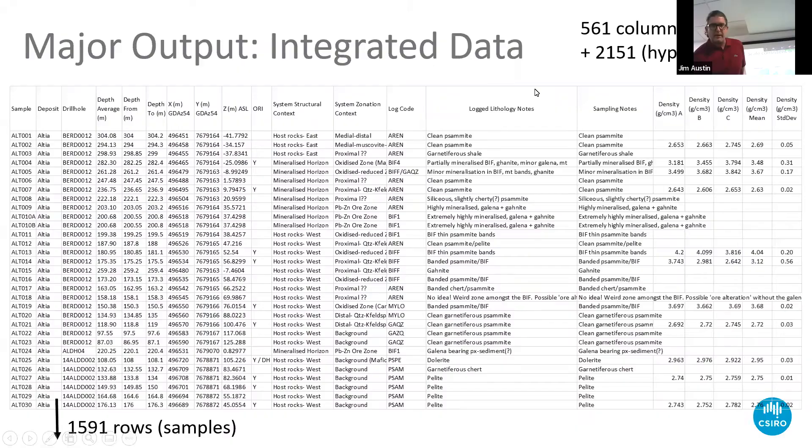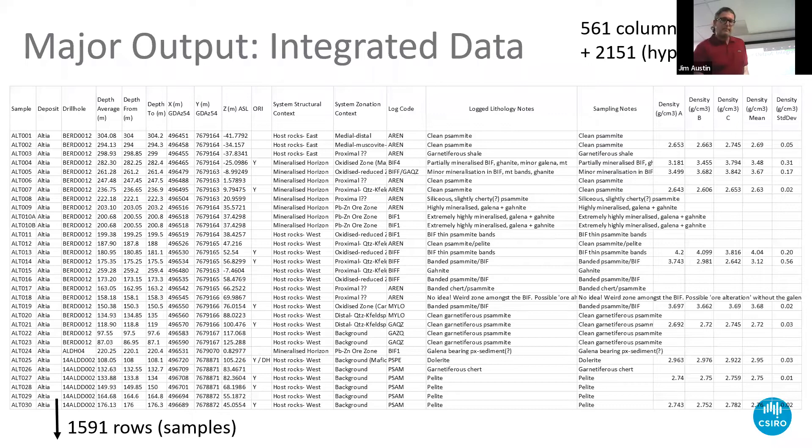There's a lot of information in there — almost 600 columns and almost 1,600 rows. Where we've got multiple data types we mean the susceptibilities, and where we've got vectors we calculate vector means of all the different vector measurements — the anisotropy and the remanence. All of that is included. It's a labor of love.